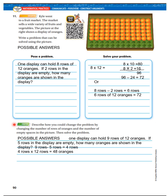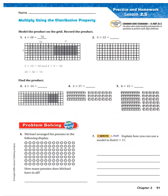Describe how you can change the problem by changing the number of rows of oranges and the number of empty spaces. Then solve the problem. One display can hold 9 rows of 12 oranges. If 5 rows in this display are empty, how many oranges are shown in the display? 9 rows minus 5 rows equals 4 rows. 4 rows times 12 equals 48. And of course, the 4 times 12 you would want to do like this as the distributive property.